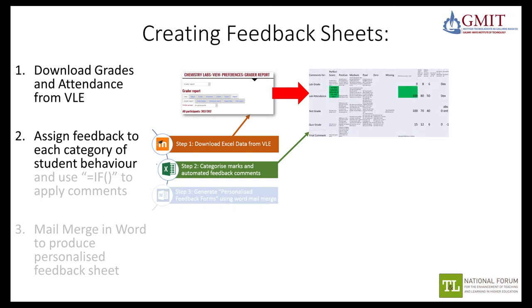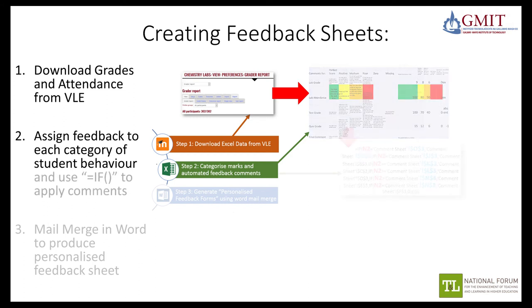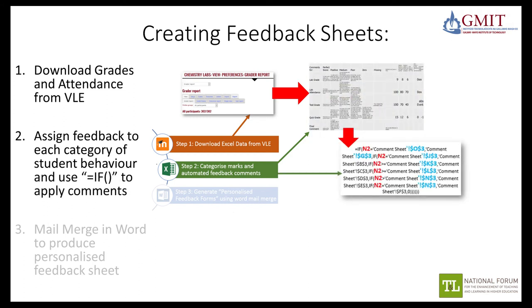For example, with attendance: if a student has perfect attendance, they get a comment that reflects that. If they have between 80 and 100%, they get a comment saying they're doing well but have missed some labs. Below 80%, they need to catch up, and below 50%, they need an intervention — they need to come see the lecturer. Once we've done that, we use an if statement to assign each of those comments to the relevant students' grades.